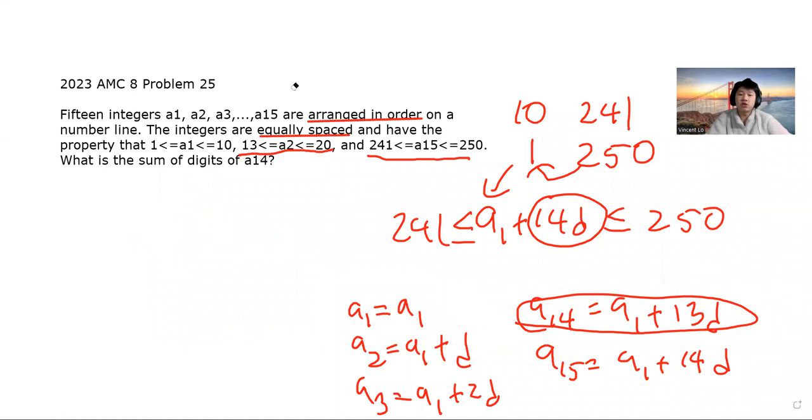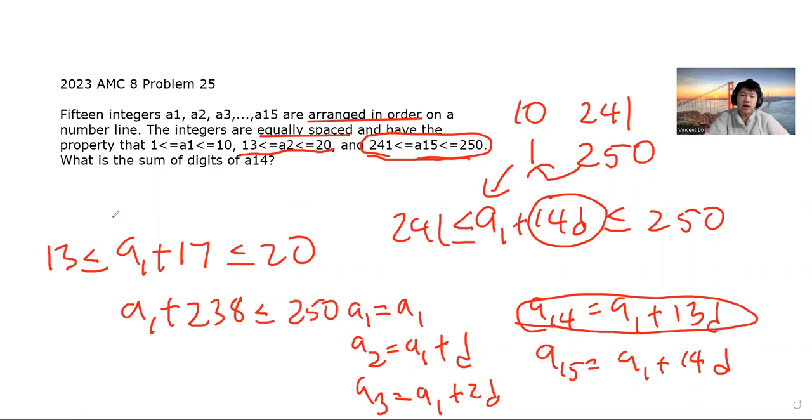We know that A2 is equal to A1 plus D, and we know that D is now equal to 17. We can set the bounds here: 13 ≤ A2 ≤ 20. Also, we can rewrite this bound. We can rewrite the bound for A15 given now what we know about A15 and D. So A1 plus 14D, which is 238, is ≤ 250, and we know that 241 ≤ that. So now that we know this, let's try to find what A1 is.